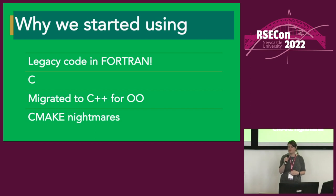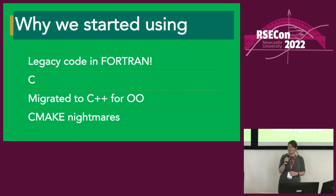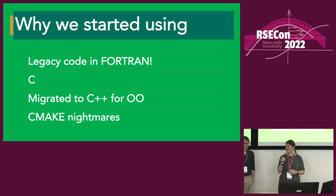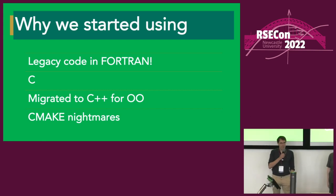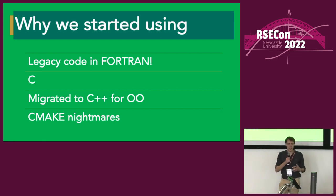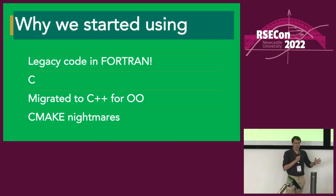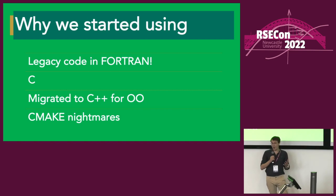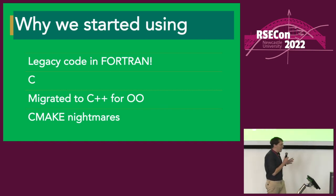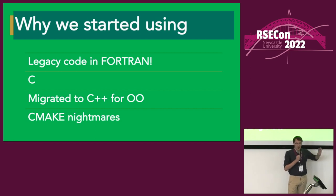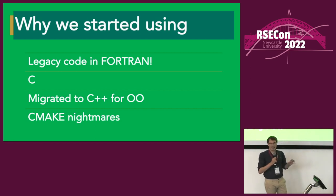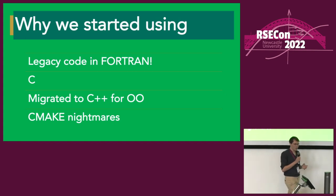We are both astrophysicists by trade before we did our PhDs, and astrophysicists love legacy code in Fortran — but we did not. Freddie started by developing the code in C, then we moved to C++ for object orientation. But when Laura started a year later and I had to write code that worked on other people's machines, we entered CMake hell — spending more time on the CMake script than on the core library itself.